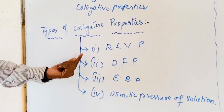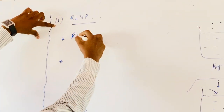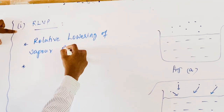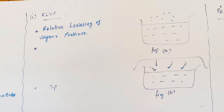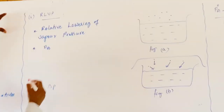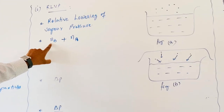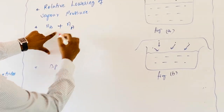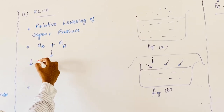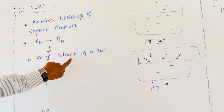Now coming to the first Colligative Property, that is Relative Lowering of Vapor Pressure, abbreviated as RLVP. When a non-volatile solute is added to a volatile solvent — here B represents the solute and A represents the solvent — while adding solute to the solvent, there will be a decreasing of vapor pressure of the solvent in the solution.